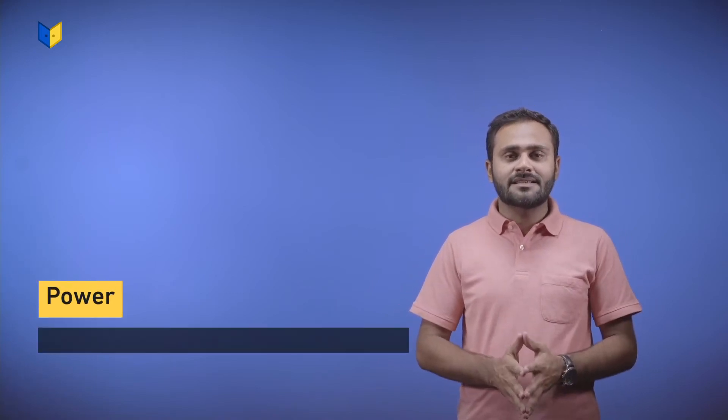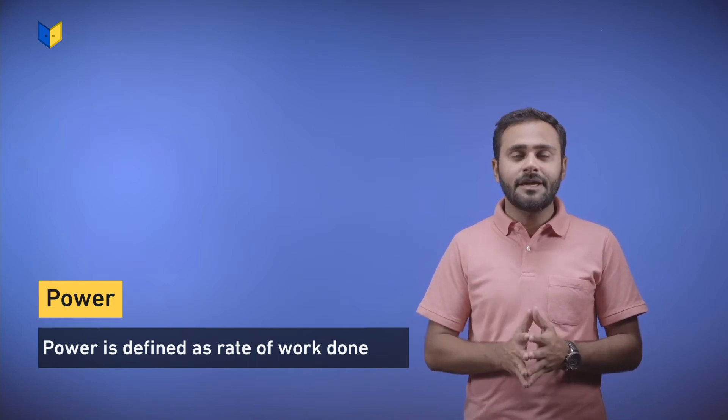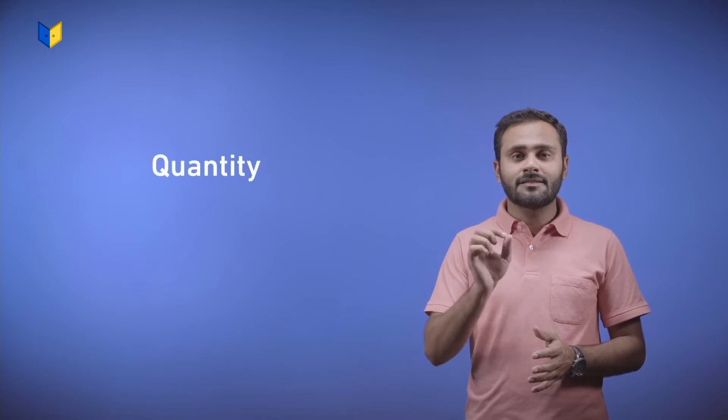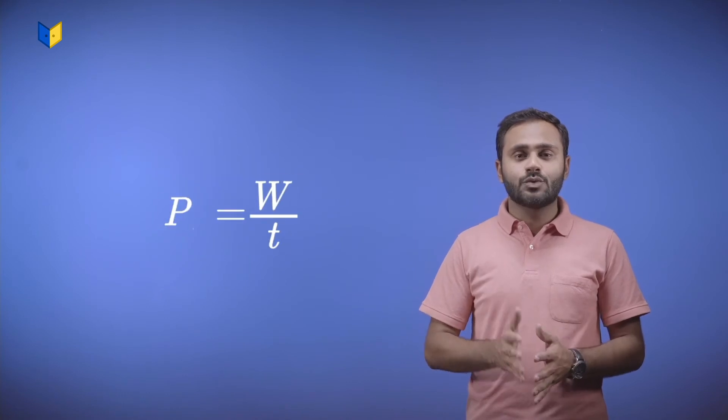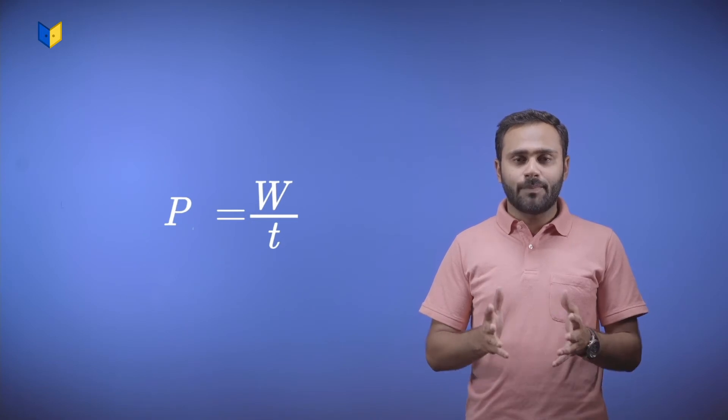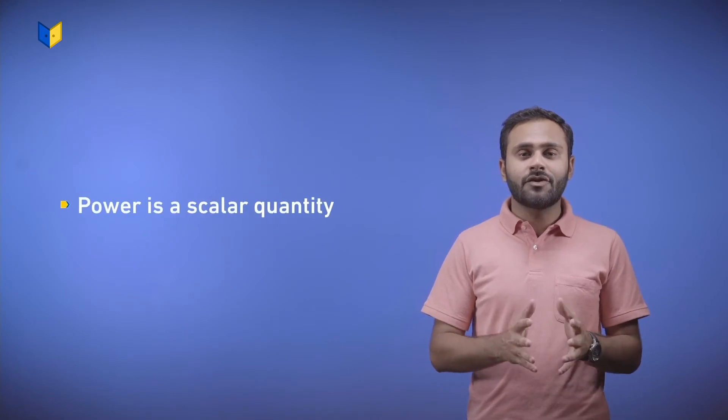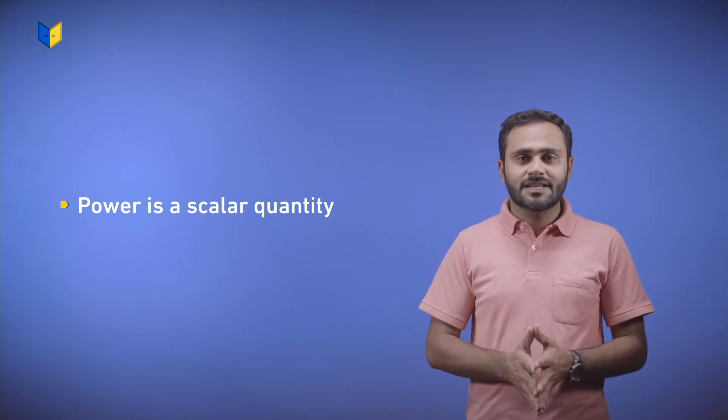Power is defined as the rate of doing work. When we talk about rate, that means the quantity is divided by time. Power equals work done over time, so P equals W over T. Power is a scalar quantity, as work is a scalar quantity.